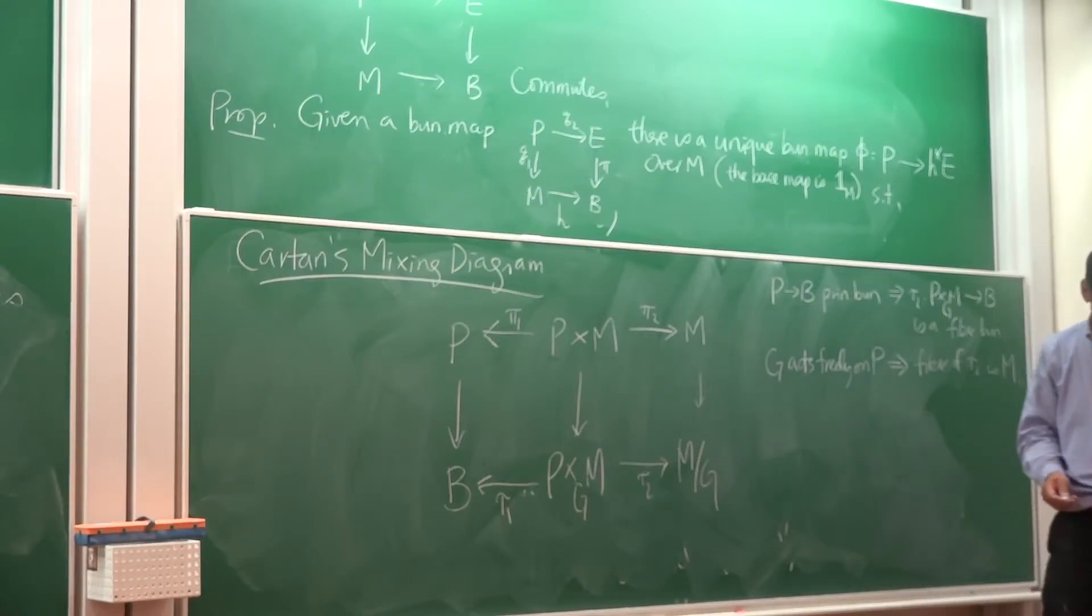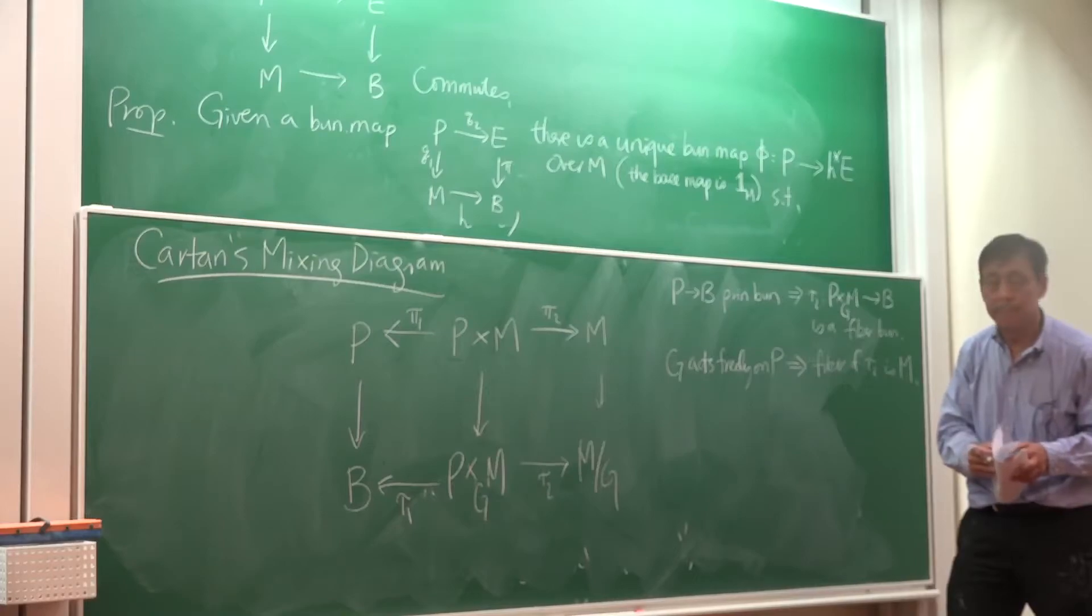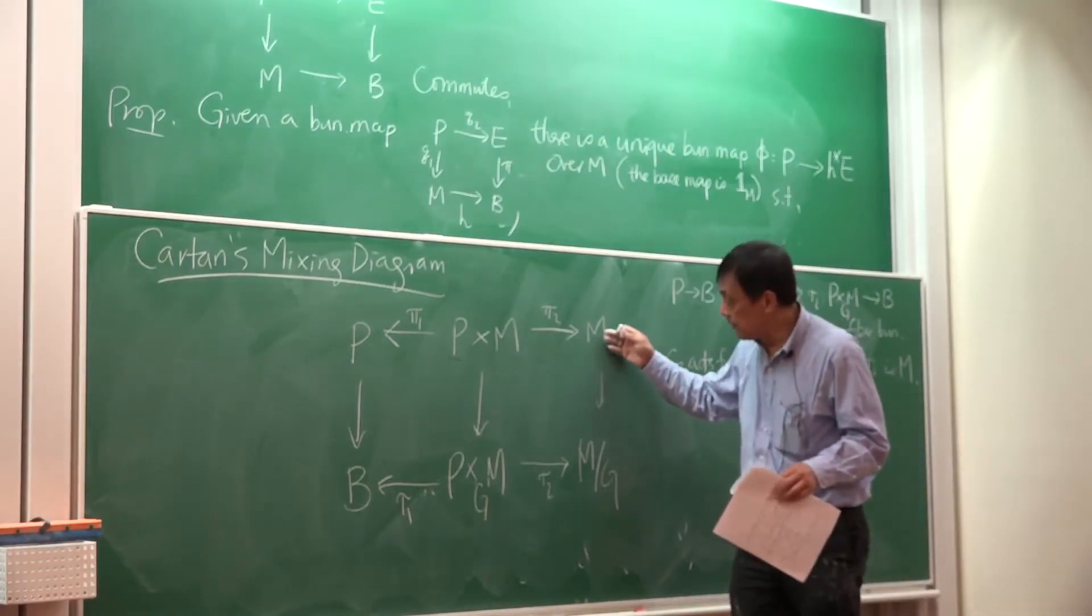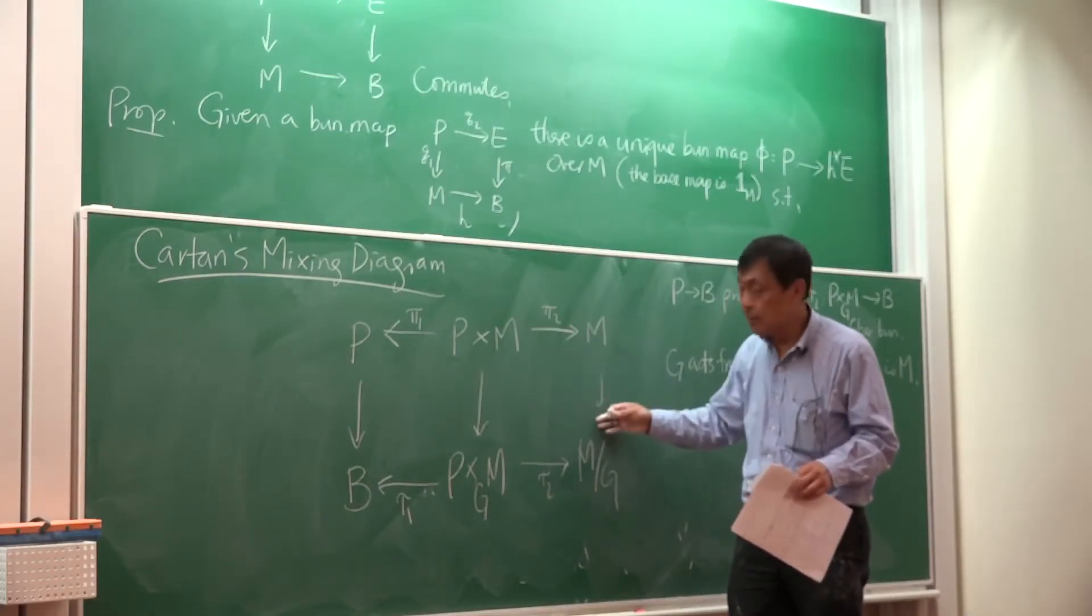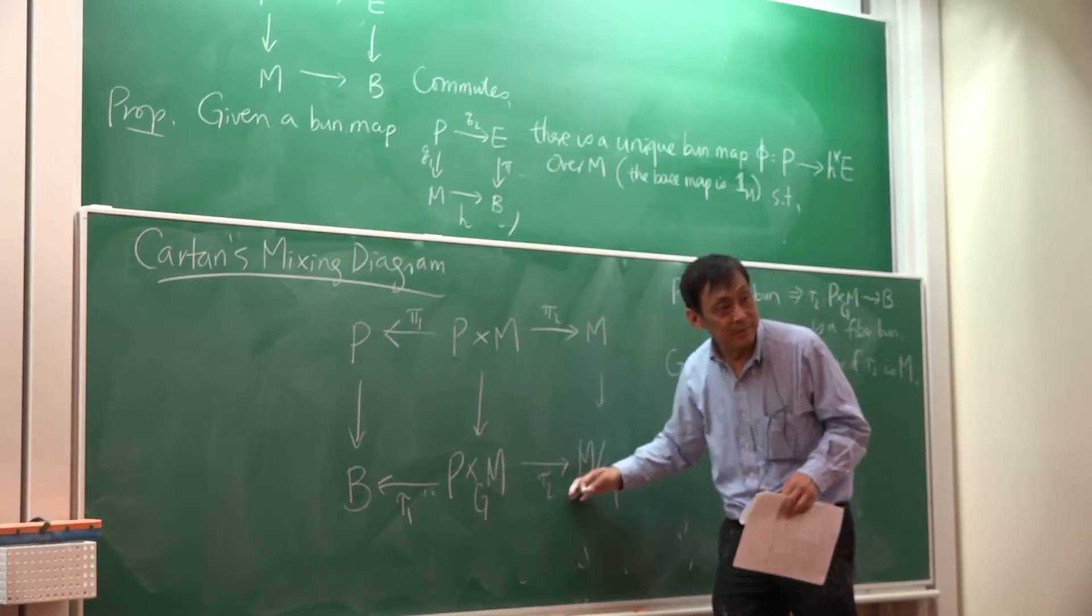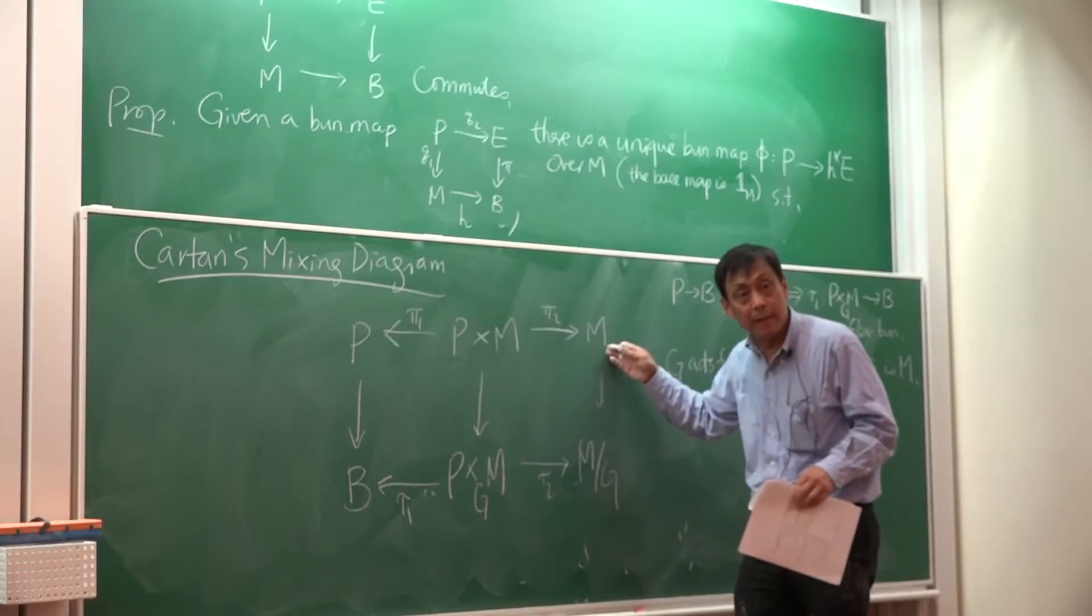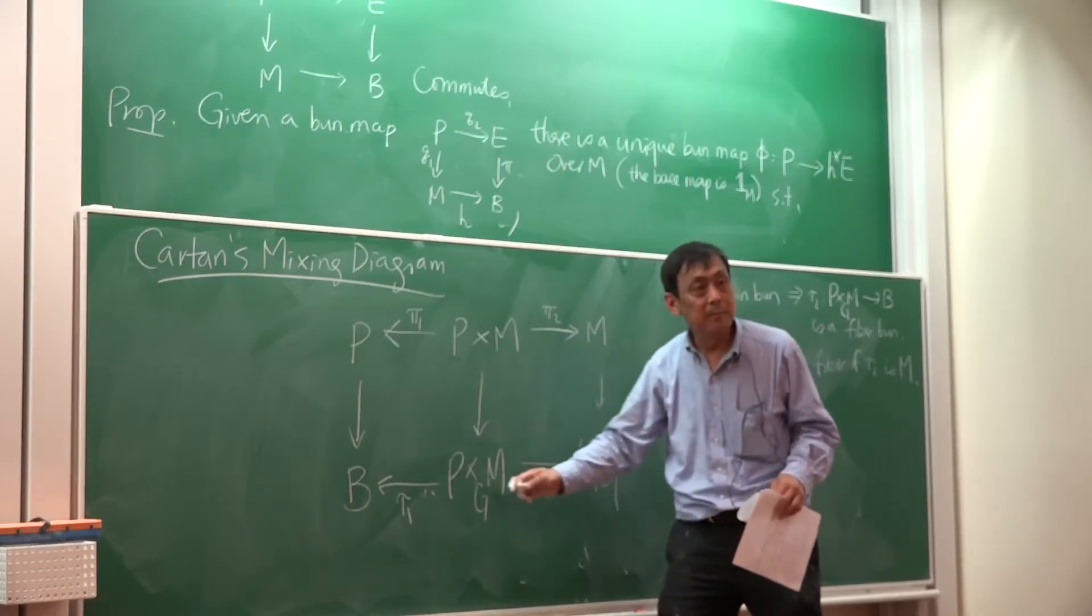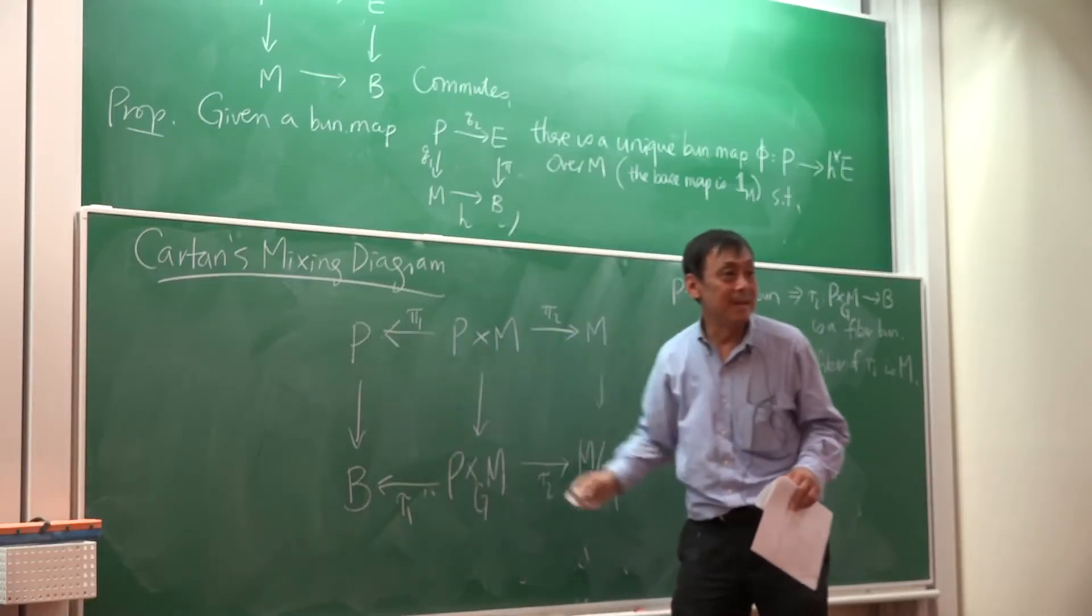Okay, now the thing to remember about this is that, so if this is a principal bundle, then this map will be a fiber bundle. And if G acts freely on M, then what is the fiber of this map?